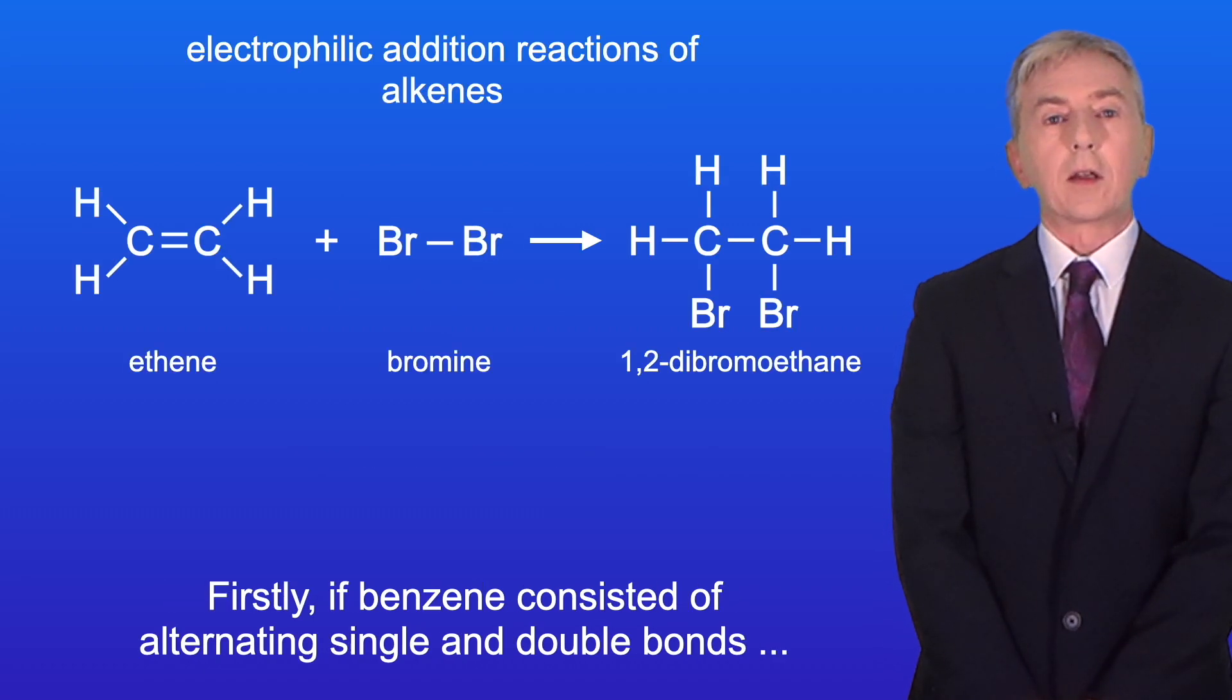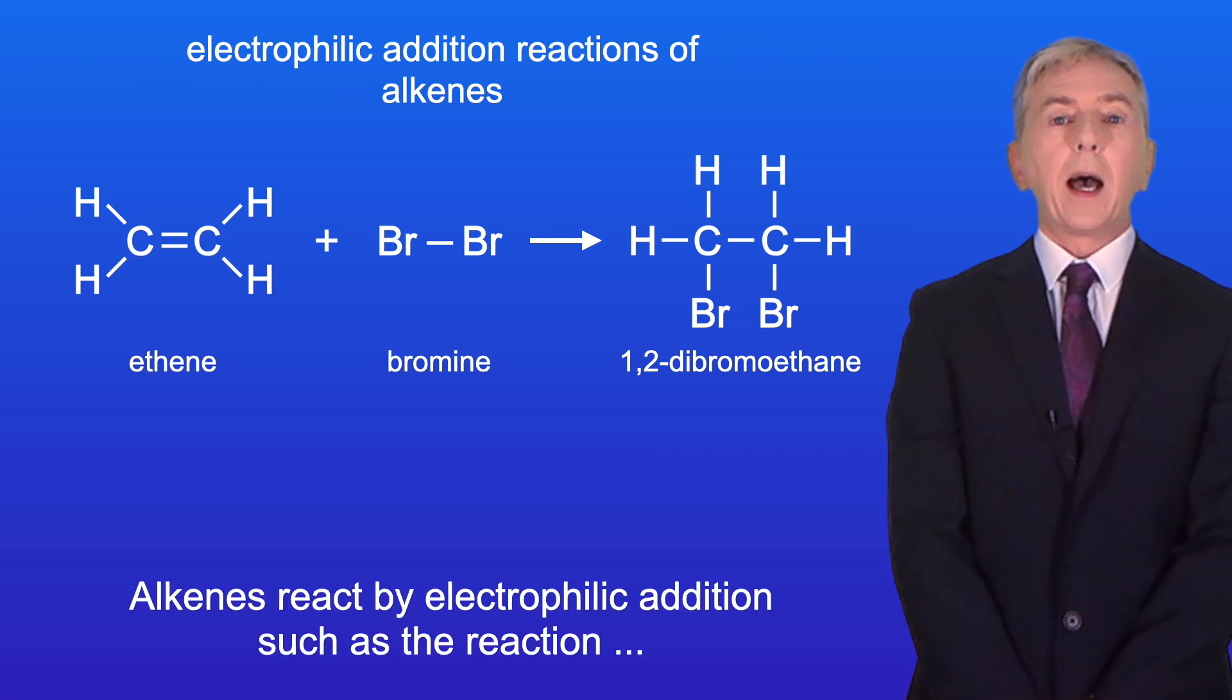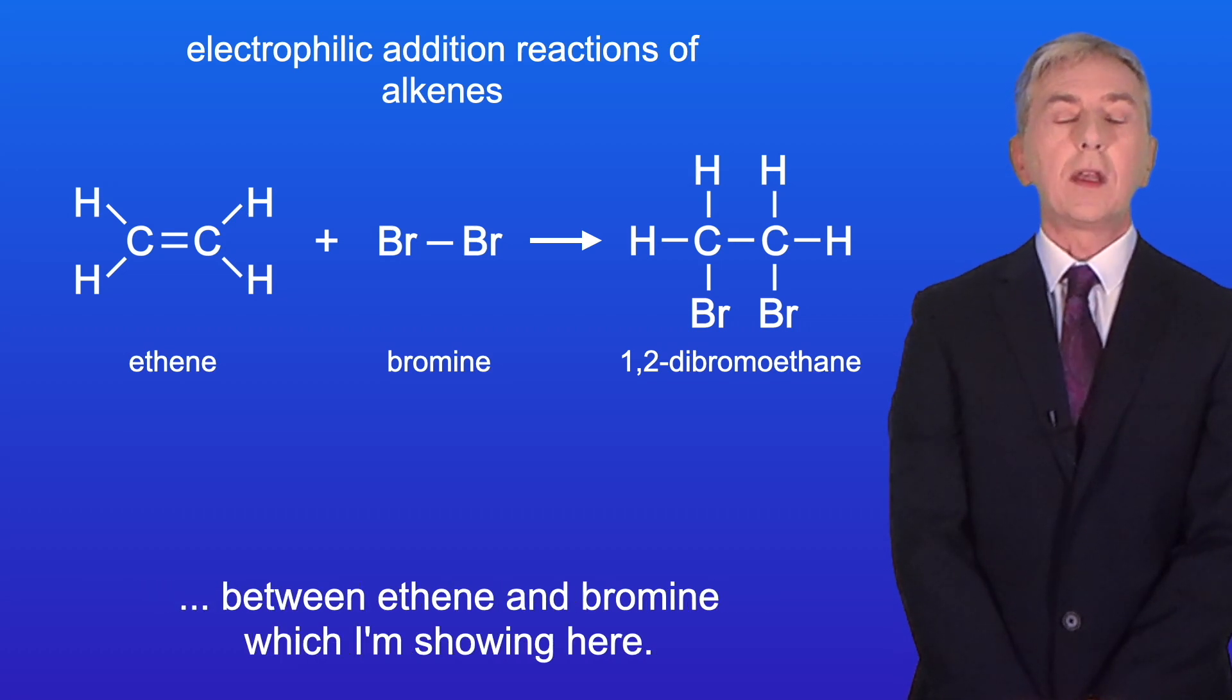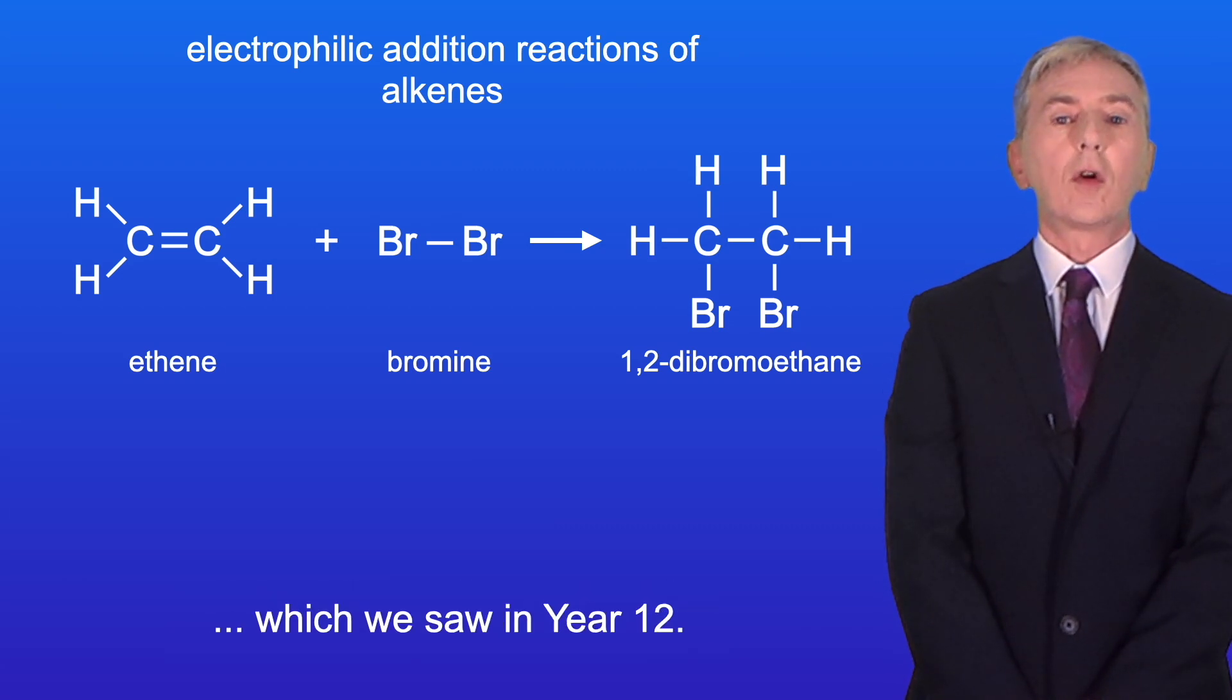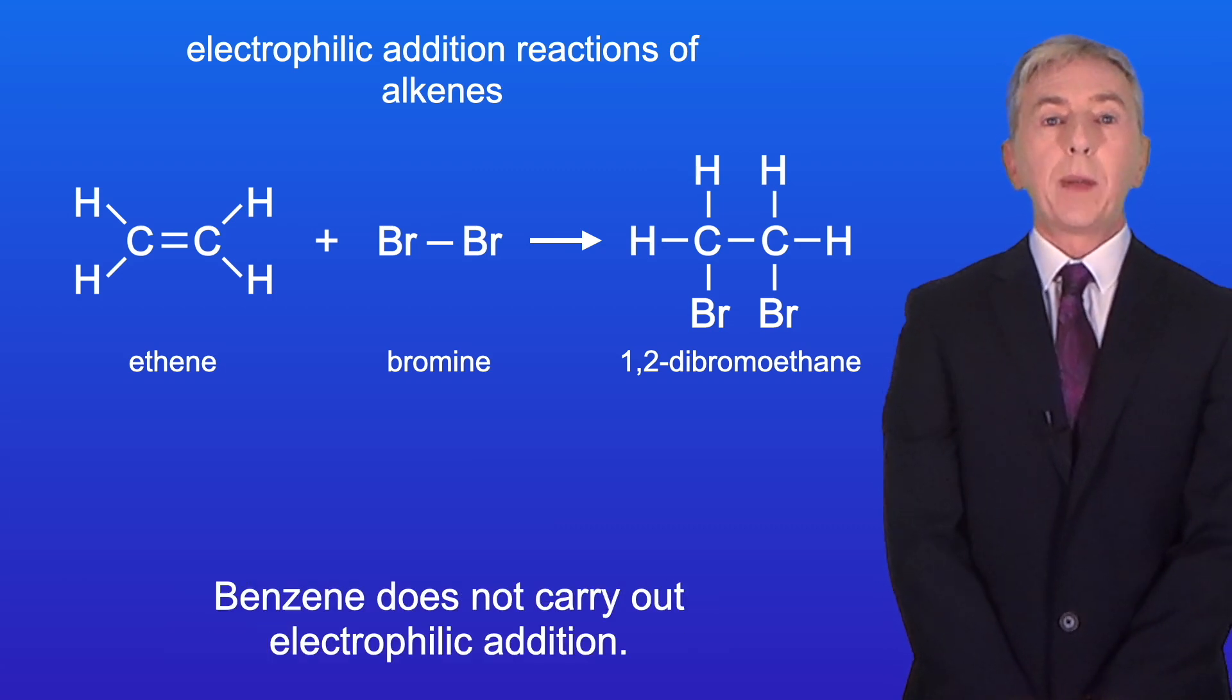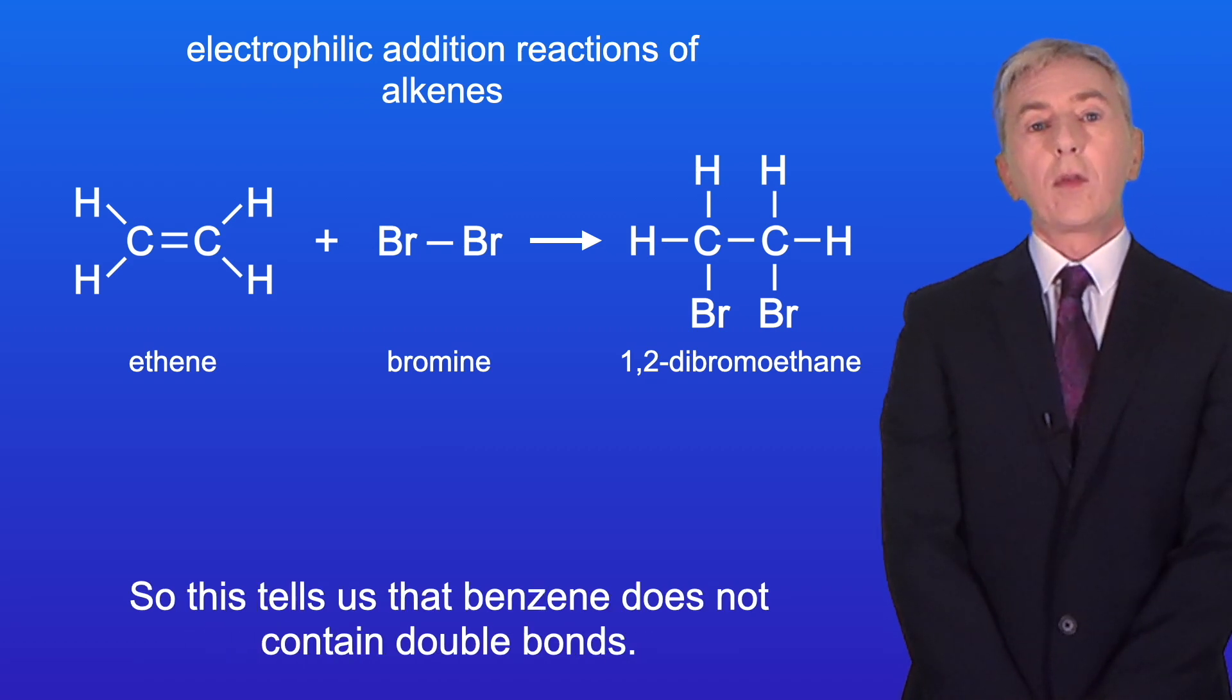Firstly, if benzene consisted of alternating single and double bonds then it would react like a typical alkene. Alkenes react by electrophilic addition, such as the reaction between ethene and bromine which I'm showing here. This reaction is the basis of the bromine water test for alkenes which we saw in year 12. Benzene does not carry out electrophilic addition and benzene does not give a positive test for alkenes with bromine water. So this tells us that benzene does not contain double bonds.